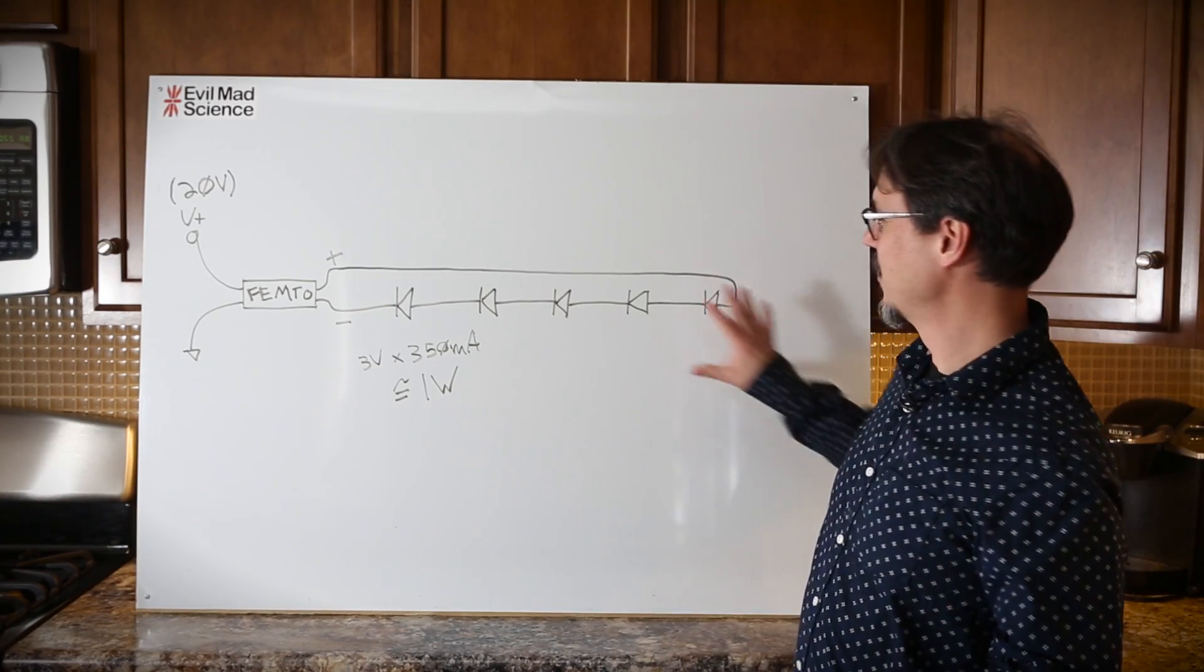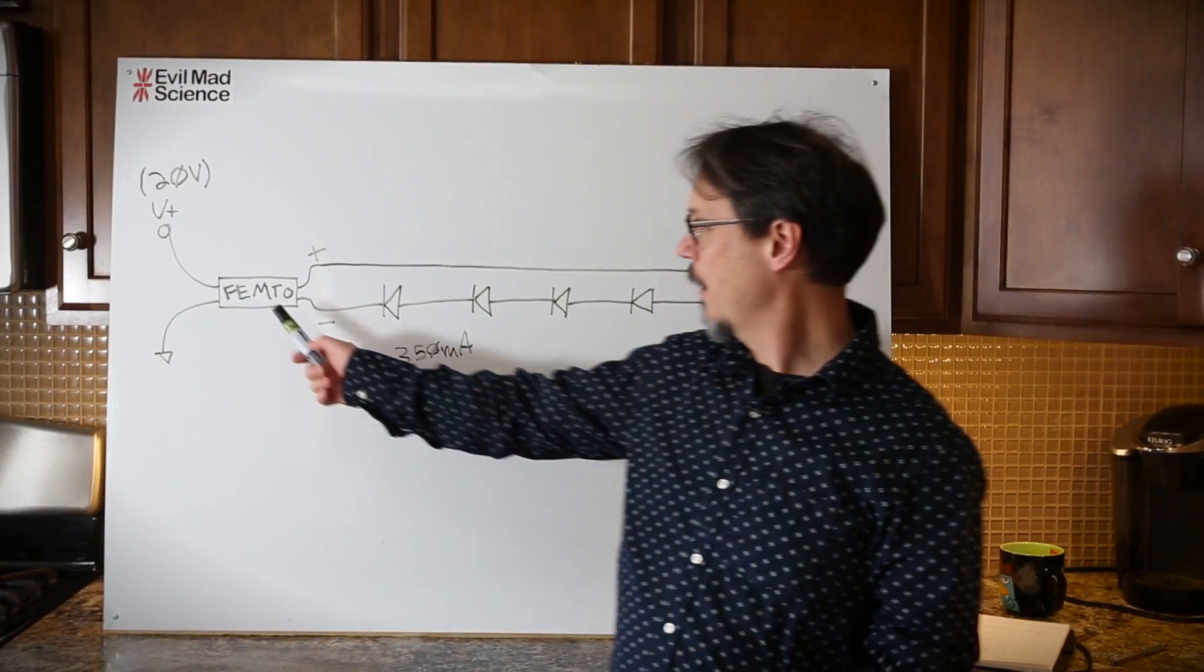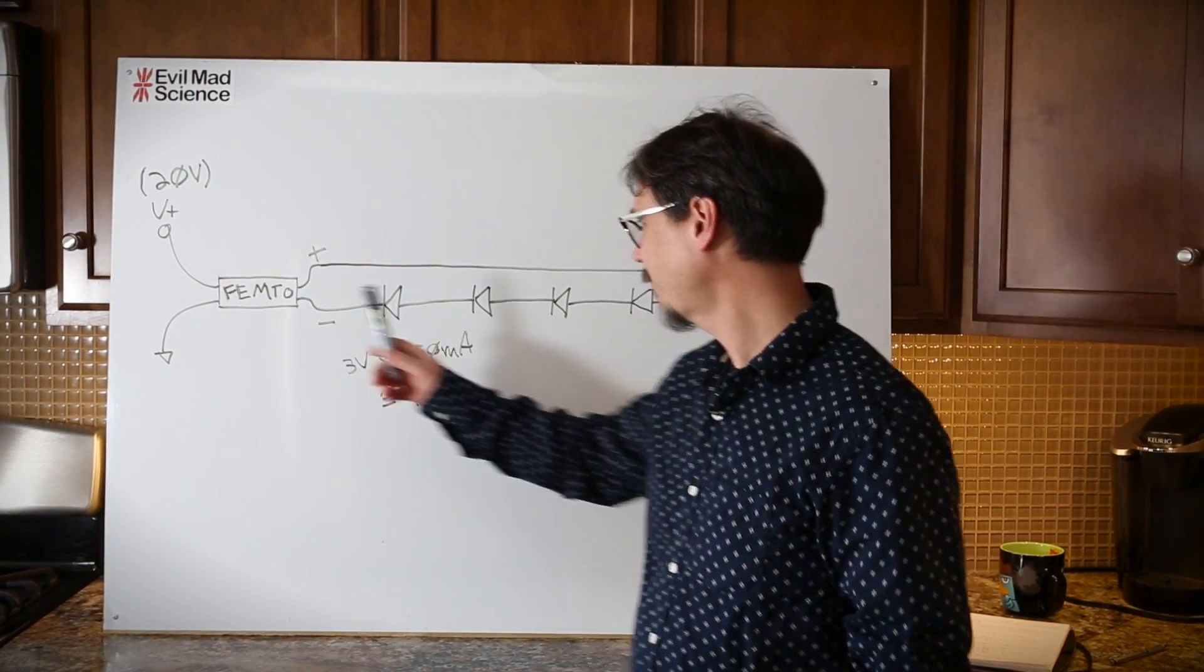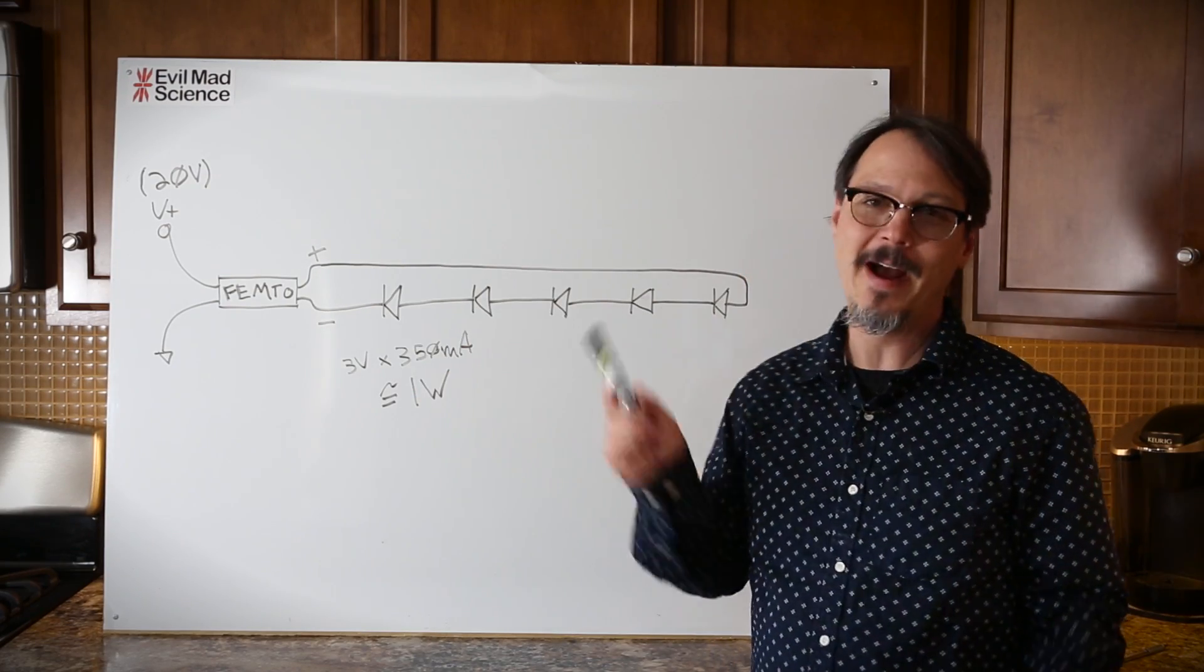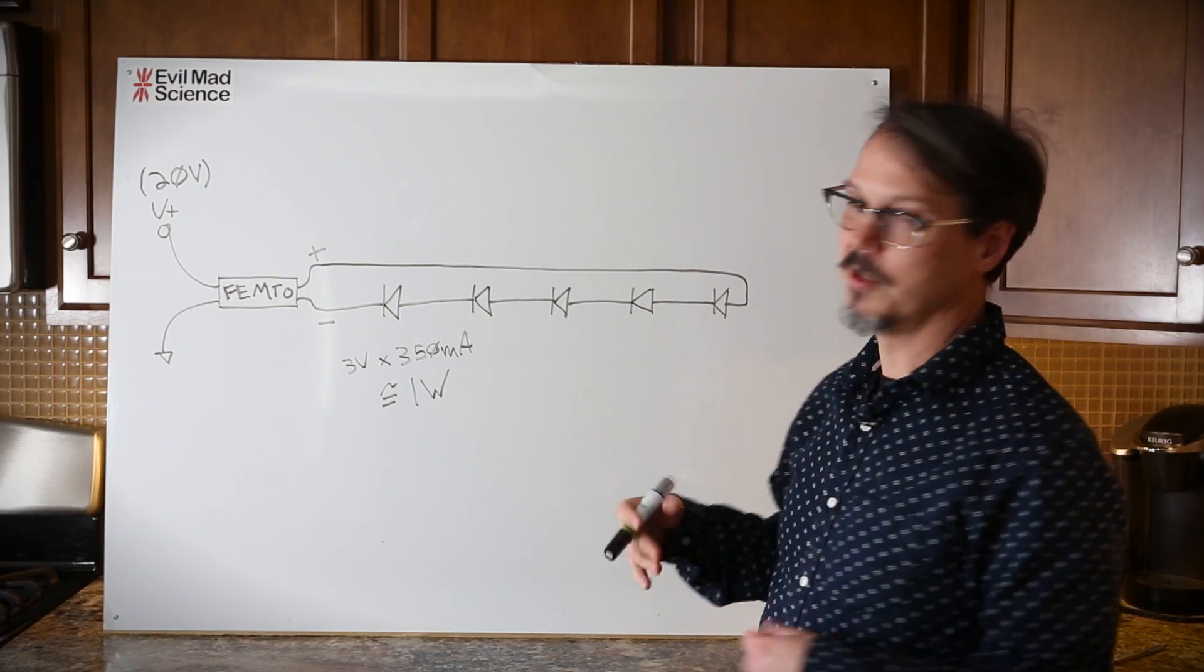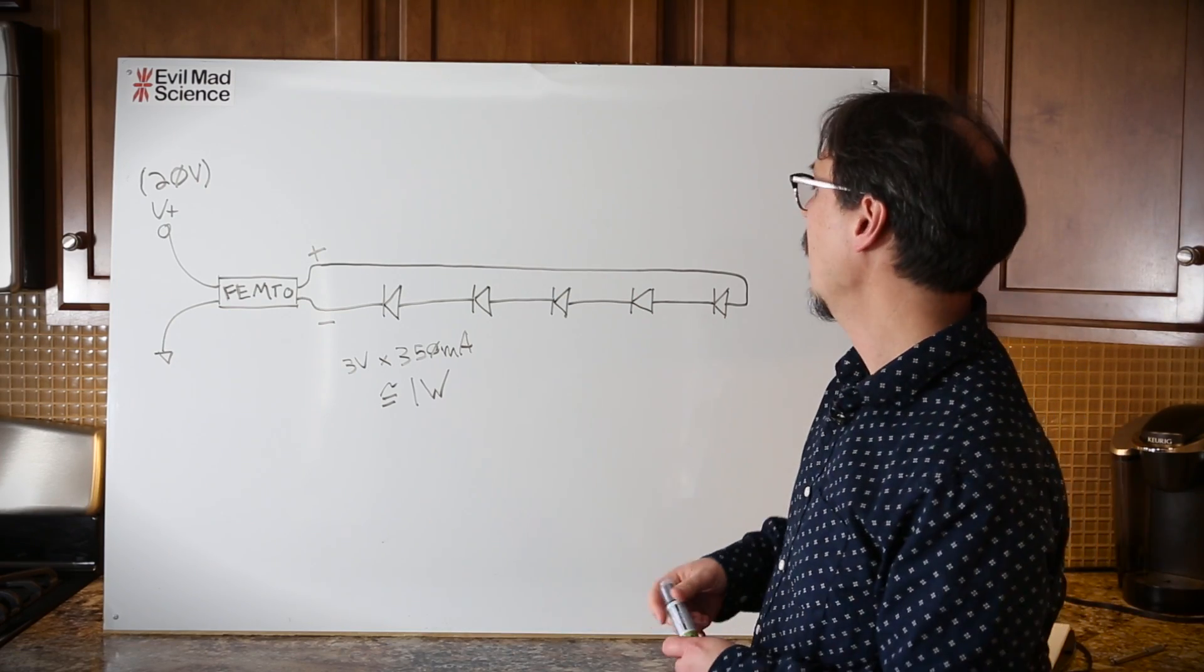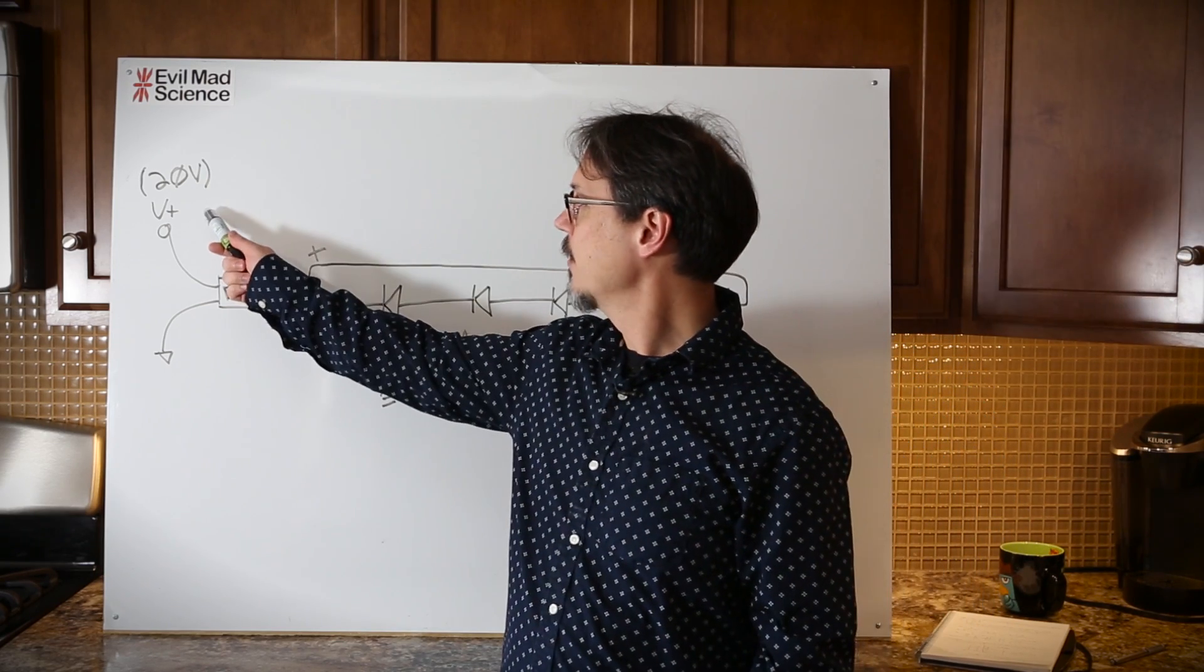For my project, this is the basic building block that I'm working with. So I have a femtobuck regulator and I have five LEDs. These come in bags of five on our storefront. Particularly for my kitchen, I'm using the warm white.